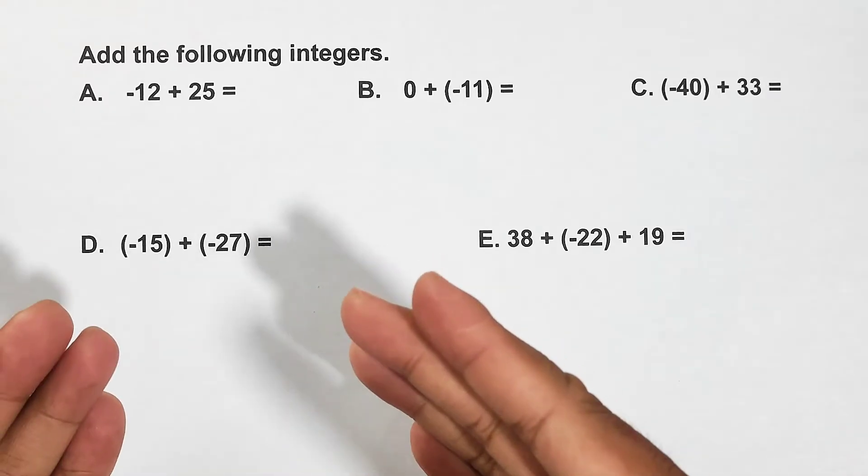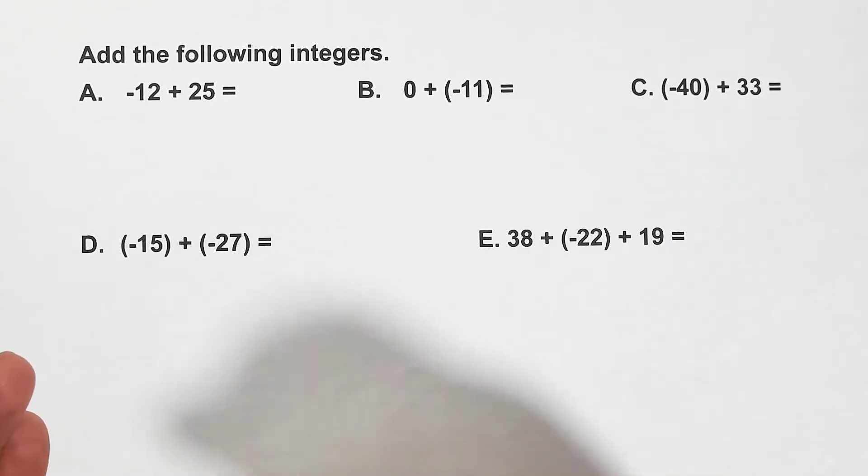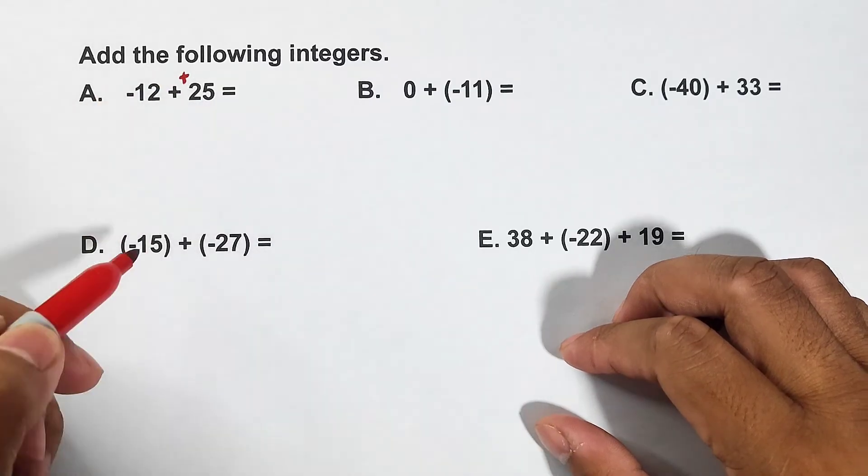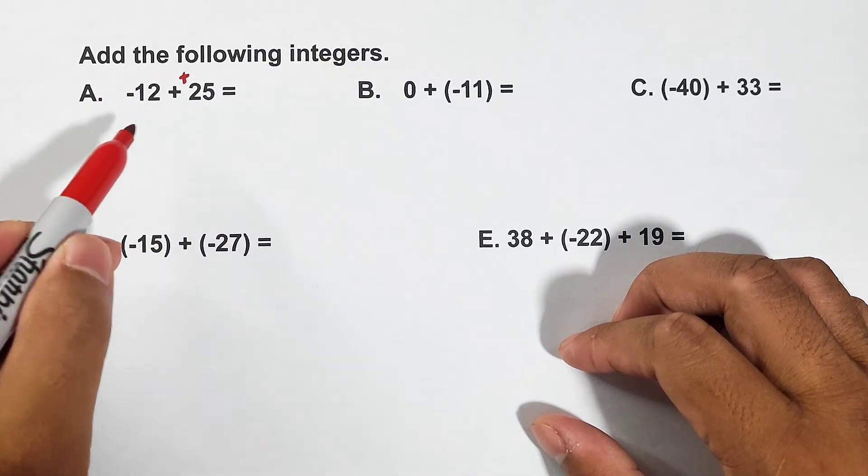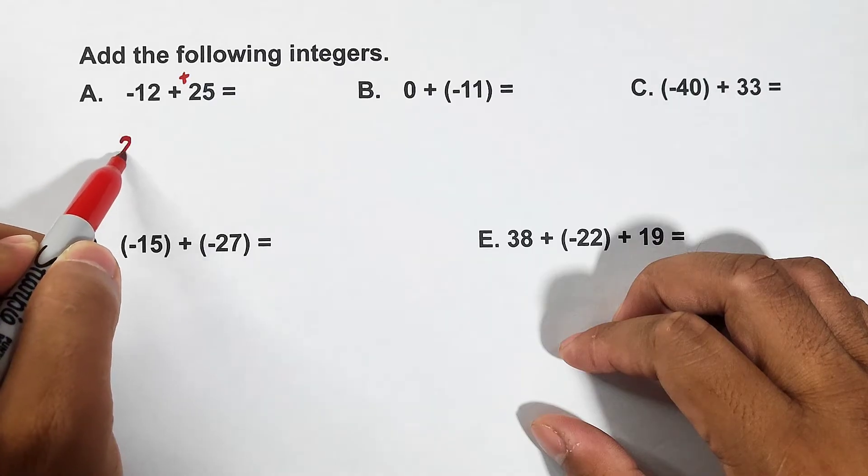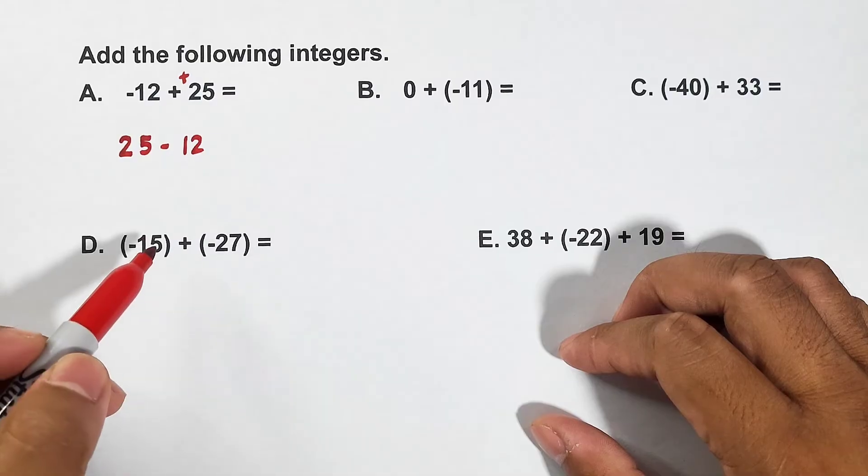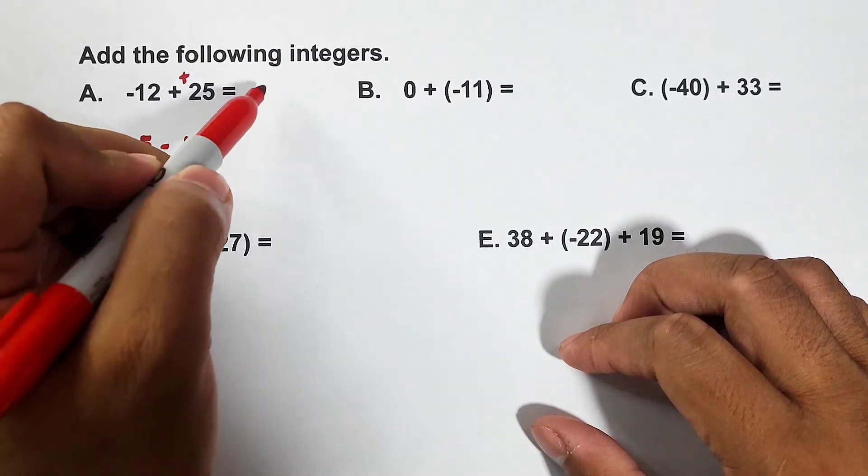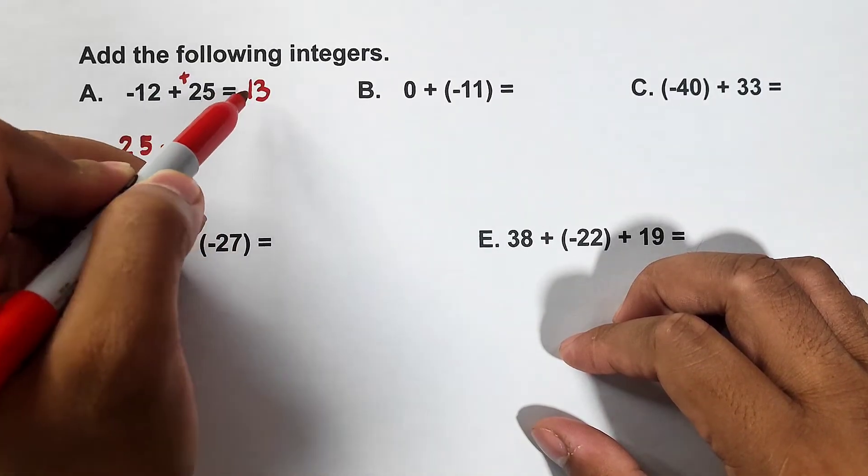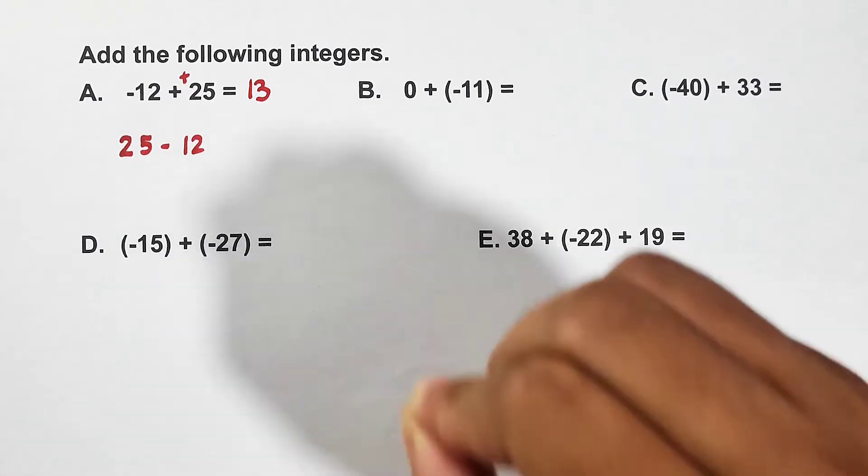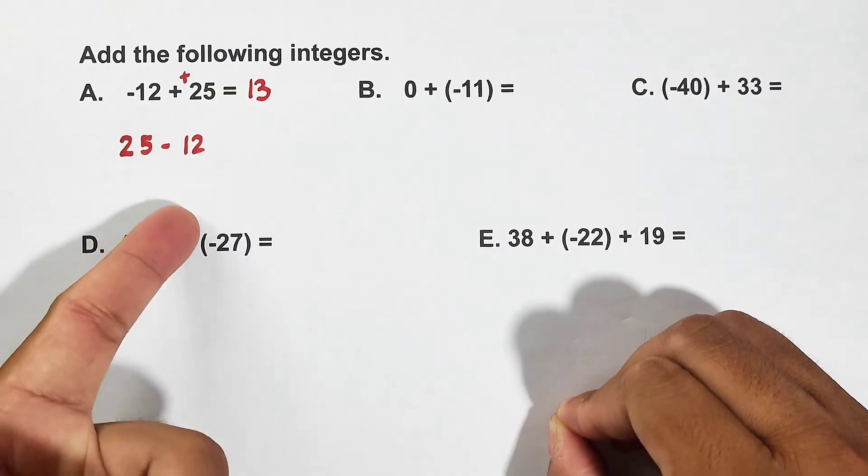So do they have the same signs? No, they have different signs. This is negative and this is positive. So what will we do here? We will subtract. So in our mind, let's do 25 minus 12. What is the answer? The answer is 13.